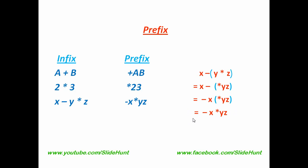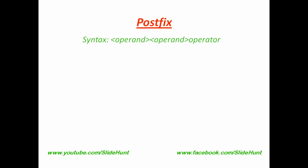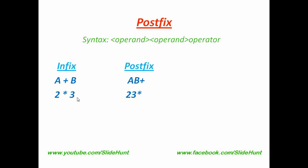There is another notation to represent expressions called postfix notation, or reverse Polish notation. In postfix notation, the operator symbol is placed after the two operands. Infix expression is easy to understand for humans, but postfix is good for machines. Postfix expression requires less time and memory to evaluate, which is the same as prefix. But the algorithm to evaluate postfix expressions is easy and straightforward, that's why machines use it. For example, A plus B in infix can be written as AB plus in postfix. Similarly, 2 star 3 in infix can be written as 2 3 star in postfix.